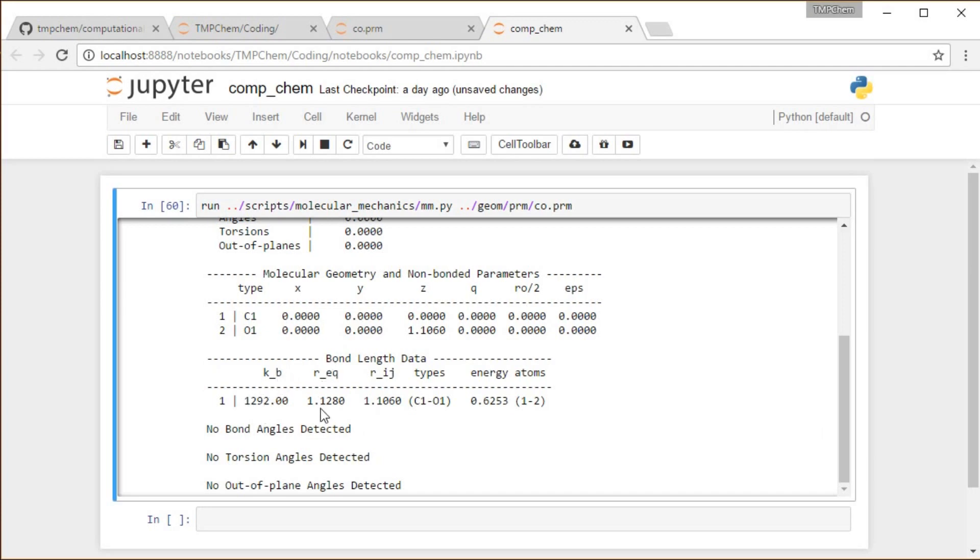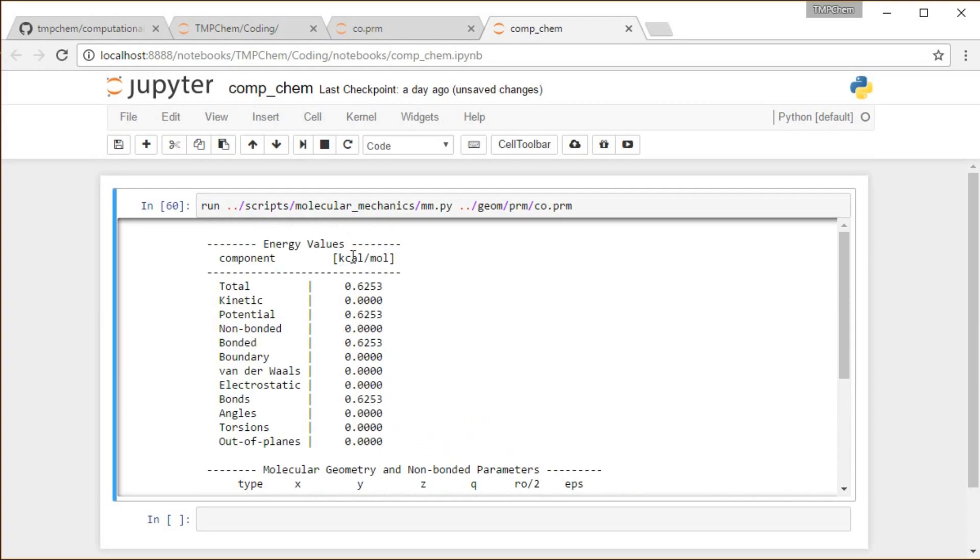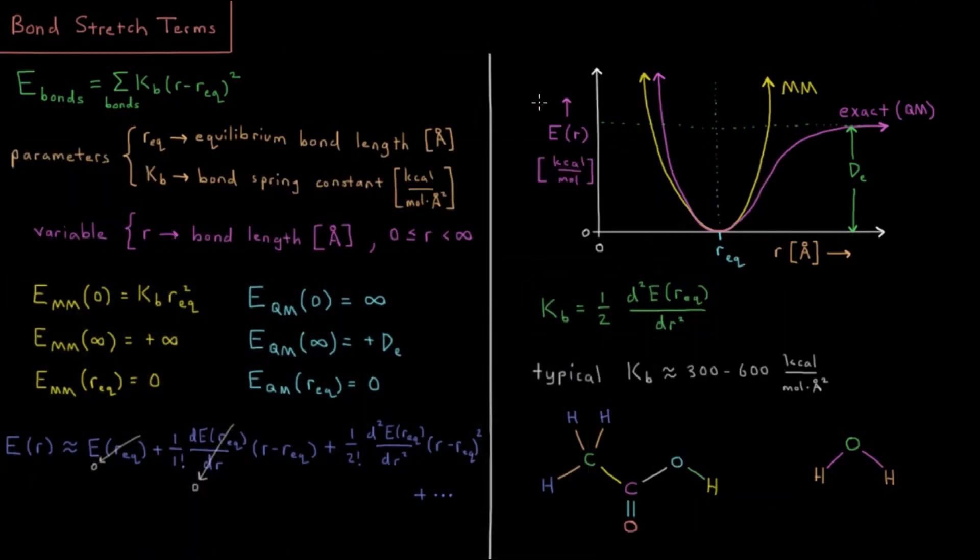Showing up some of the parameters that I inputted from reading in this file. Of interest to us, we have the bond parameters, the bond length, what atom types were present in that bond, and then what the energy of that bond is. These parameters with this bond length gives an energy of 0.6253 kilocalories per mole for our Amber molecular mechanics bond stretch energy.